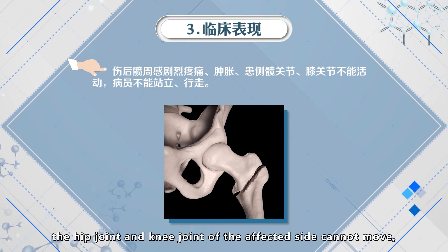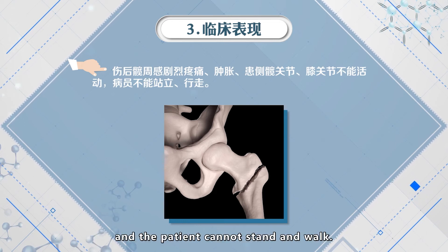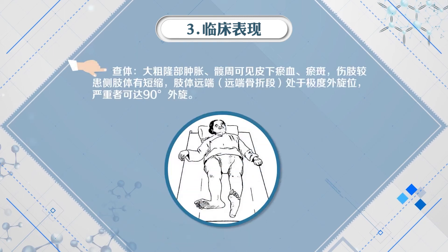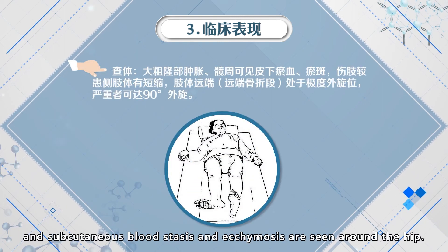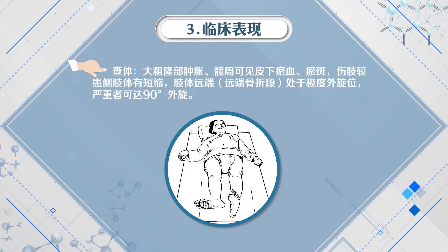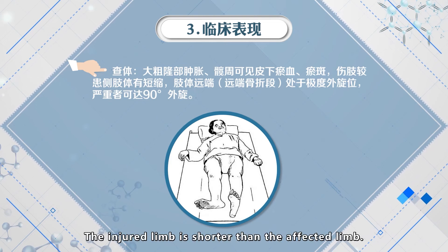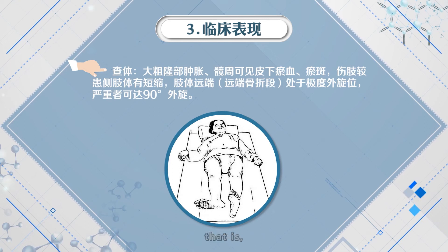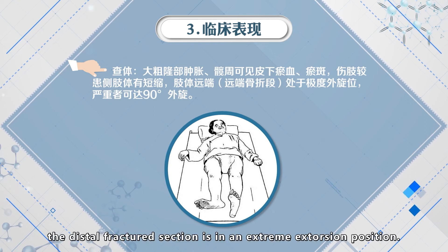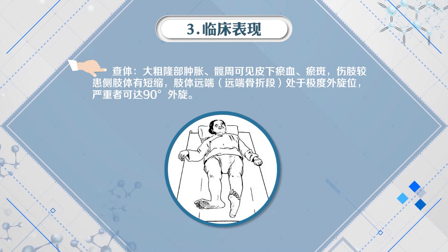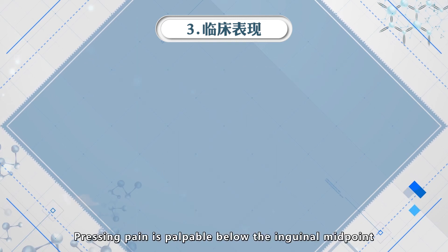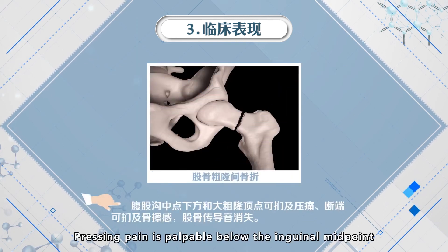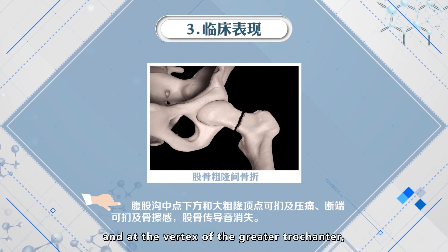After injury, severe pain and swelling are felt around the hip. The hip joint and knee joints of the affected side cannot move, and the patient cannot stand and walk. On physical examination, the greater trochanter is swollen and subcutaneous blood stasis and ecchymosis are seen around the hip. The injured limb is shorter, and the distal fracture section is in extreme external rotation position. In severe cases, external rotation can reach 90 degrees. Pressing pain is palpable below the inguinal midpoint and at the vertex of the greater trochanter.